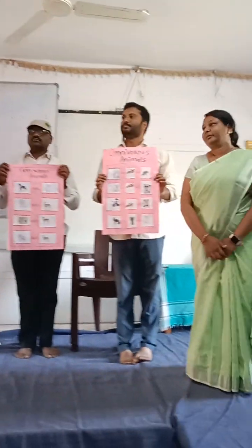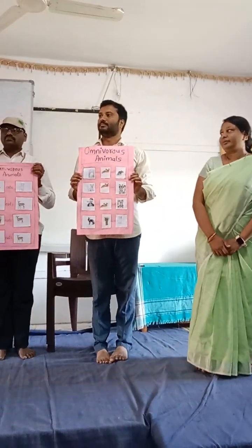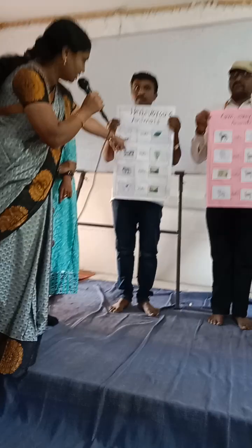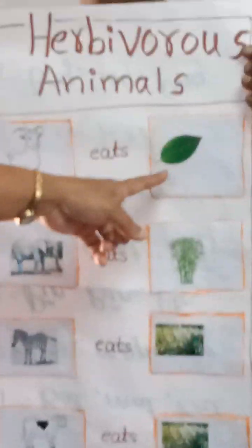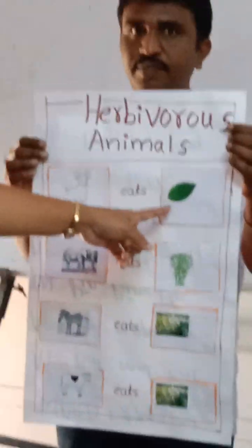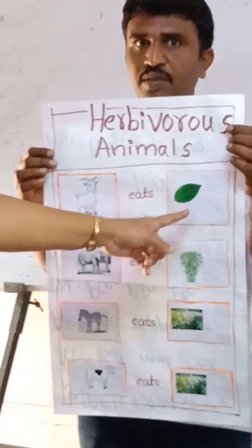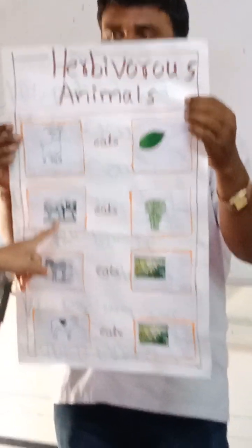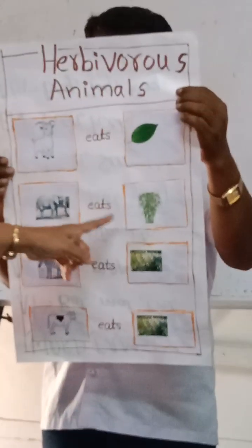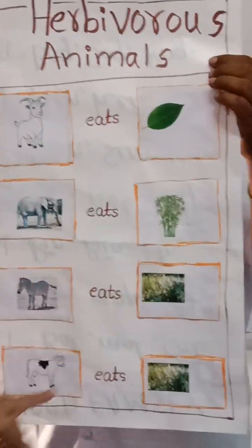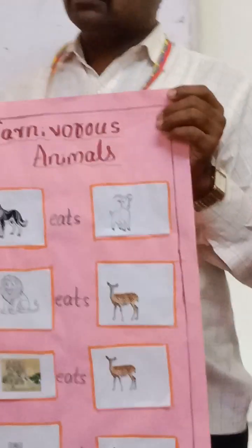This is the rebus method of presentation. Instead of writing the word 'goat,' we have used a picture of a goat. Instead of writing 'leaves,' we have used a picture of a leaf. In this way, pictures are used for elephant with bamboo, zebra with grass, and cow with grass, instead of spellings.